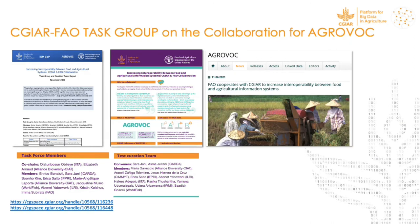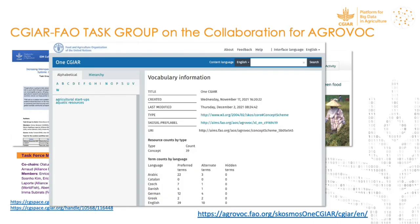We created a task group this year to reinforce CGI and FAO collaboration for the interoperability of data in agri-food information systems. With the task group and creation team, we produced a report with recommendations and a fact sheet. The AgroVoc team also created a sub-concept schema for One CGIAR that gathers all the terms submitted up to now.